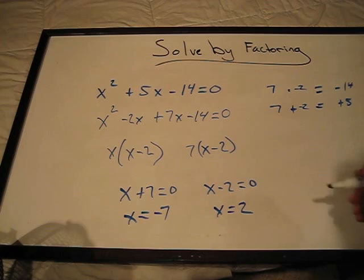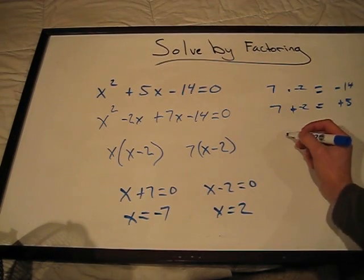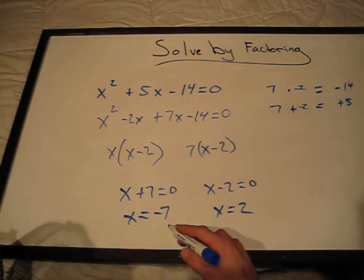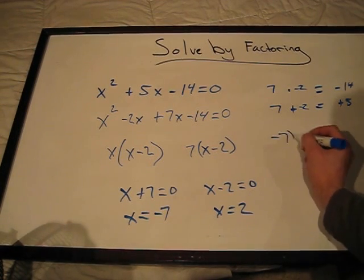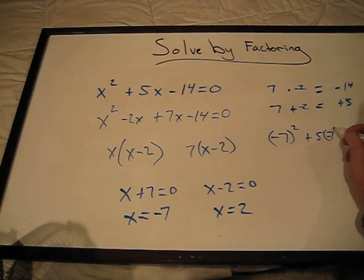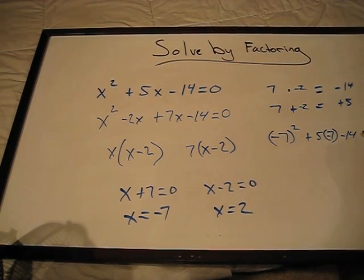Now we can throw these into a quick check into the original problem. So we'll check x equals minus 7 first. Minus 7 squared plus 5 times minus 7 minus 14 equals 0. That checks out.